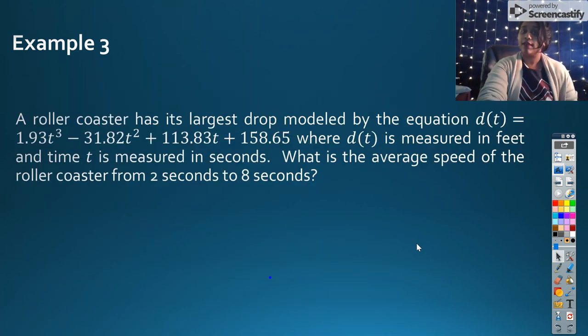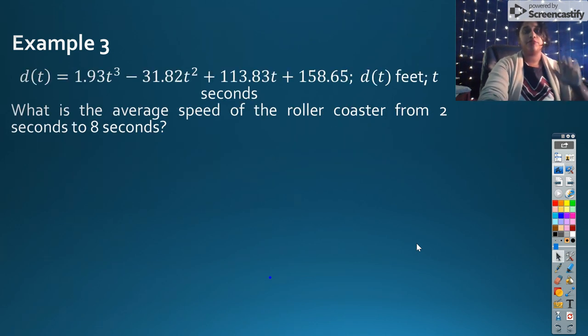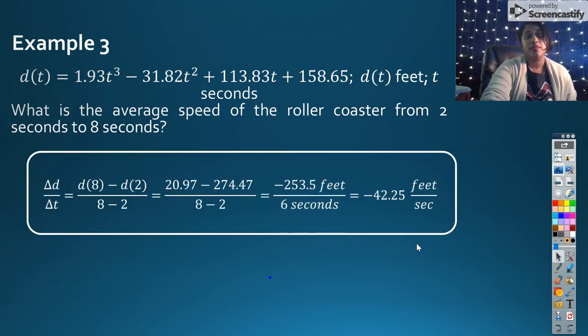We have a third example. Again, read through it, pull the important information. There's the only information I need. Now we know we're looking from 2 to 8. That's my A to B. So I plug that in. F of B minus F of A all over B minus A. I keep on going.